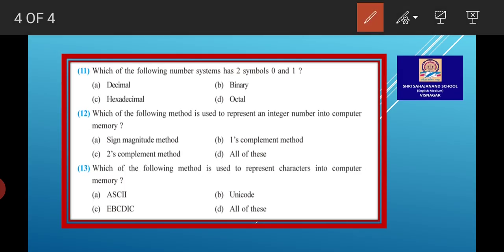Question 11, which of the following number systems has two symbols? Zero and one. Answer B, Binary.